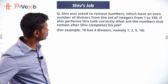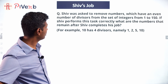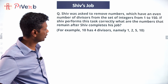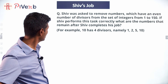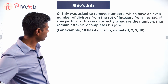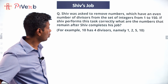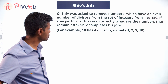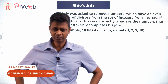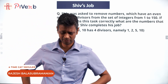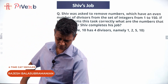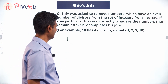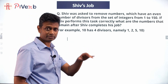Shiv was asked to remove numbers which have an even number of factors from the set of integers from 1 to 150. If Shiv performs this task correctly, what are the numbers that remain after he completes his job? Wonderful! Let's think about this. Write down numbers: one has only one factor, so one will remain.